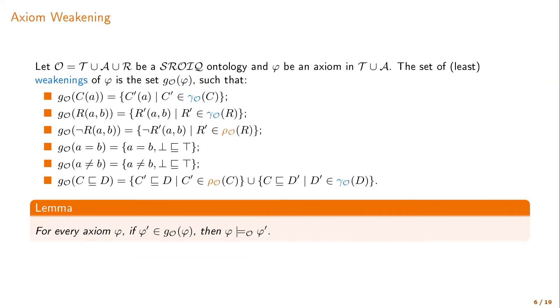And given these concepts, then we can talk about weakening axioms given these operators. And this is done in a relatively straightforward way. For example, if we have an axiom that says that C is subsumed by D, we can generalize it. We can weaken it by either specializing C into C prime to something more specific or by generalizing D, the right hand side, to something more general, right?